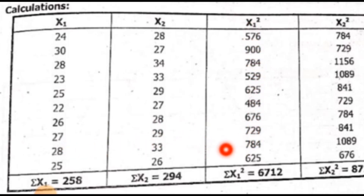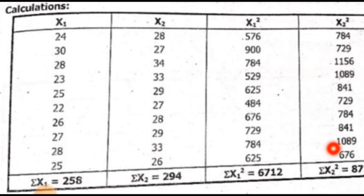We need to get the summation of x1 squared, which is equal to 6,712. For the morning MBS, x2, we compute the x2 squared values: 28 squared, 27 squared, 24 squared, 23 squared, and so on. The summation of x2 squared is 8,718. Counting the data points gives us n1 and n2 both equal to 10.